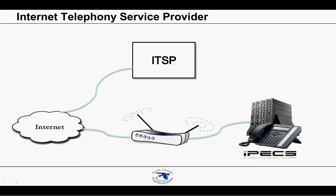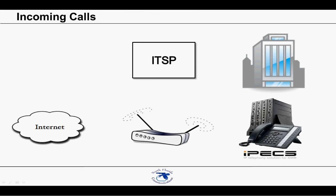The ITSP will, in fact, become your phone company. Your phone numbers will come from the ITSP, and inbound and outbound calls will go through the ITSP. So let's say someone calls you from another business. Once they dial your number, their telephone company will connect to your ITSP. Your ITSP will send the call to your IP address over the internet. Your router will identify the incoming traffic as a SIP call and will then send it to your phone system, which will recognize the number that was dialed and send it to the proper phone or phones.